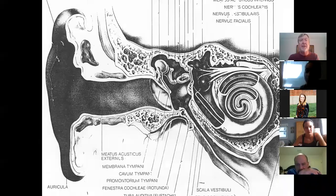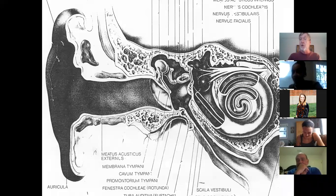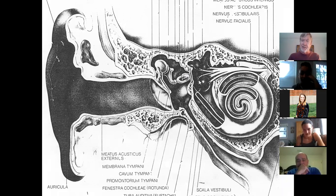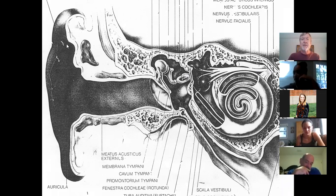So this cochlea is overblown in this picture. This supposedly is the balance organs, and then this would be that eighth cranial nerve going to the brain.